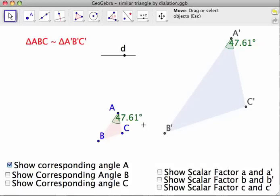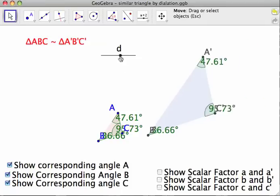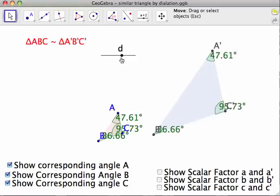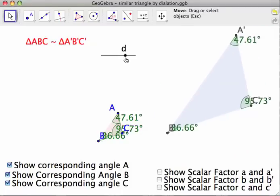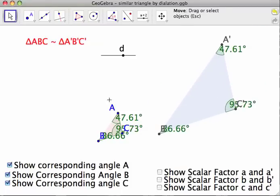So if you look at that, angle A and A prime are 47.61 and 47.61. Angle B looks like 36.66. And angle C, 95.73. And again, no matter how you move these, A, in this case, by changing the scale, the angles stay exactly the same.